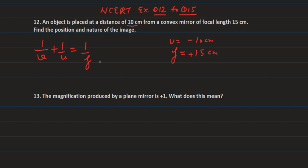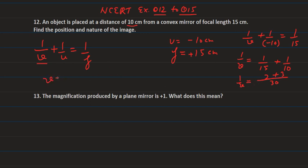We substitute into the equation: 1/v + 1/(-10) = 1/15. So 1/v = 1/15 + 1/10. Taking LCM of 30, this gives (2 + 3)/30 = 5/30. Taking the reciprocal, v = 30/5 = 6.